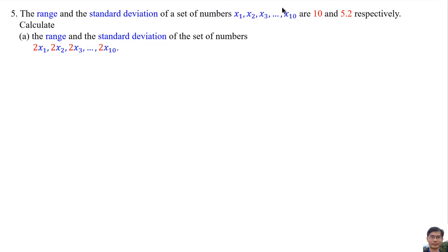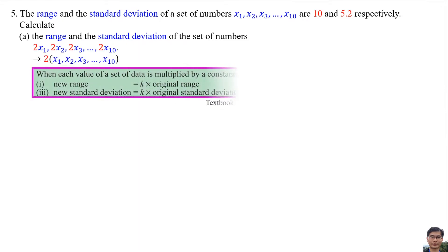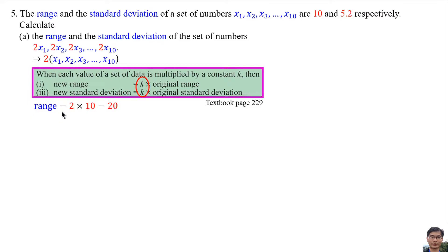The new set of numbers is found by multiplying the original set by 2. According to the textbook page 229, when each value of a data set is multiplied by a constant k, the new range equals k times the original range, and the new standard deviation equals k times the original standard deviation. Here k equals 2, so the new range is 2 times 10, which equals 20.